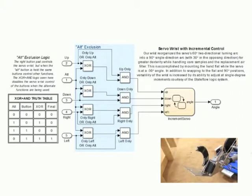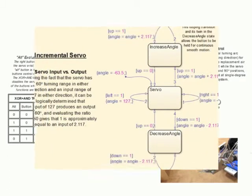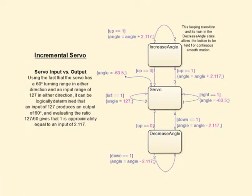The other major feature of the servo wrist is the logic system known as incremental servo. This logic system allows the wrist to snap immediately to the two most common positions, level with the ground and 90 degrees. The wrist is also capable of moving in one degree increments to any position between the two presets, allowing Reaper to adapt to any situation.